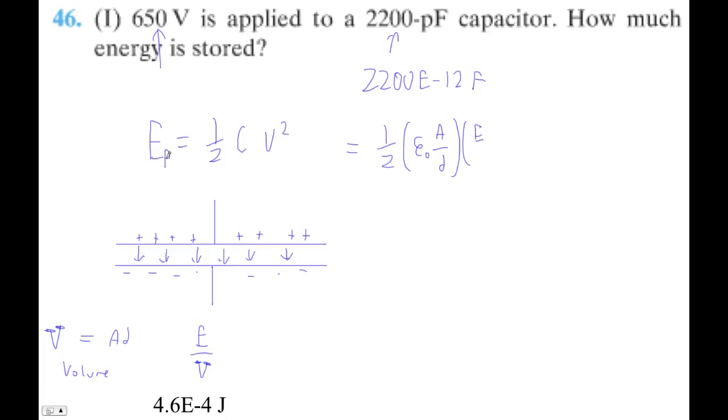And then the voltage would just be the electric field. So I'm going to call this potential energy so that we don't get confused about our E's. So this is our electric field times the distance, squared.